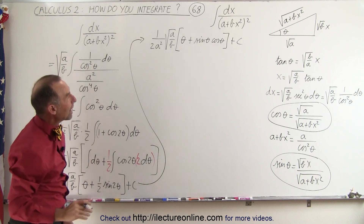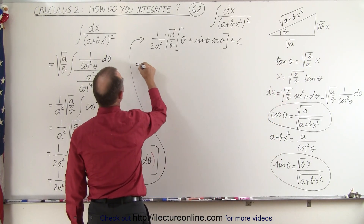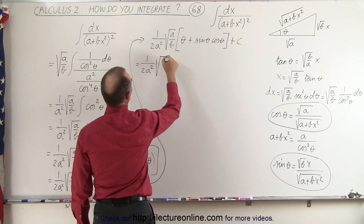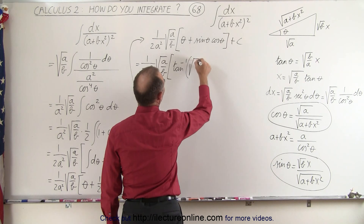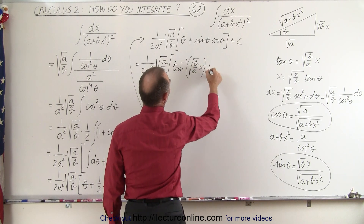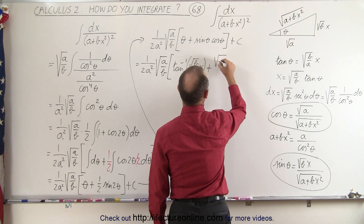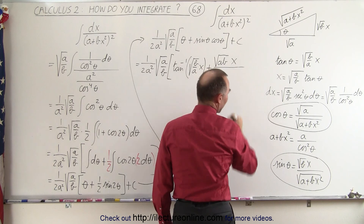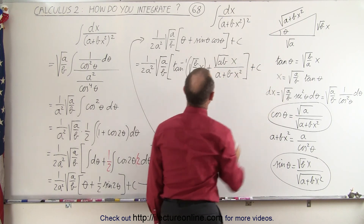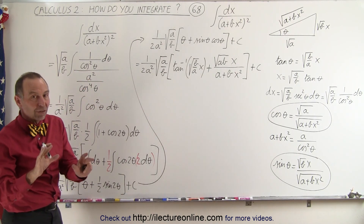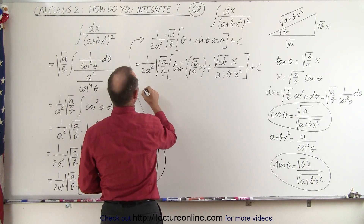We substitute back: for theta we have the arctangent of the square root of B over A times X. This becomes equal to 1 over 2A squared times the square root of A over B, times the inverse tangent of the square root of B over A times X, plus — for sine times cosine — the product gives us the square root of A times B times X divided by A plus BX squared, plus a constant of integration.